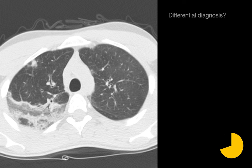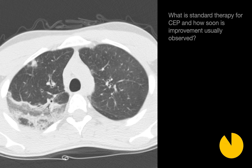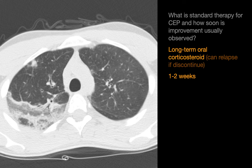What's your differential diagnosis for this case? We are presented with a focal lung opacity consisting of ground glass opacities and a few bands of consolidation. Ground glass opacities that don't appear in isolation are non-specific, so the differential is better based off the bands of consolidation, giving us this list. Since ground glass opacities are present, one of the seven items on this list is excluded. This case is an example of chronic eosinophilic pneumonia. Standard therapy for CEP is long-term oral corticosteroids, and improvement can usually be observed within one to two weeks after initiation of treatment.